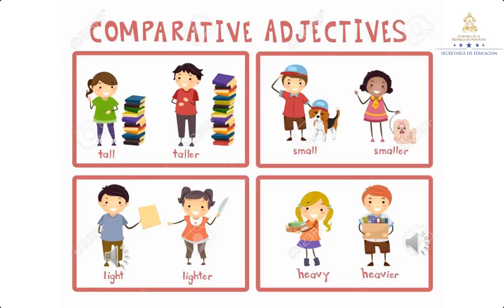So we can see the examples here for comparative adjectives. Tall — taller. Alto, más alto. Small — smaller. Pequeño, más pequeño. Light — lighter. Liviano, más liviano. And heavy — heavier. Y pesado, más pesado.